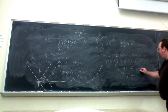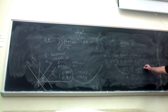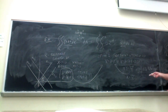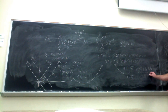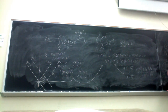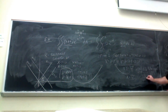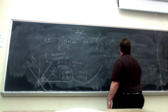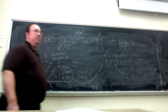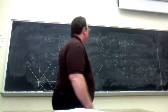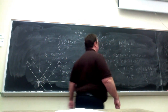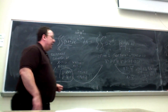The Jacobian of x,y with respect to u,v is x_u·y_v − y_u·x_v. All partial derivatives are ±1/2. ∂x/∂u = 1/2, ∂y/∂v = −1/2, ∂y/∂u = −1/2, ∂x/∂v = 1/2. So we get (1/2)(−1/2) − (−1/2)(1/2) = −1/4 − 1/4 = −1/2. Don't forget the absolute value — the Jacobian is always positive — so the Jacobian is 1/2.